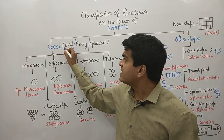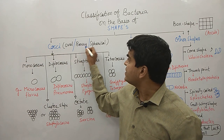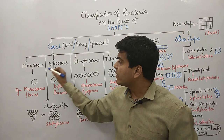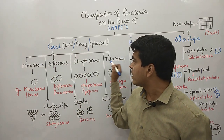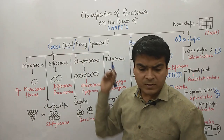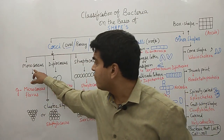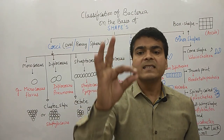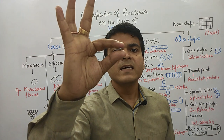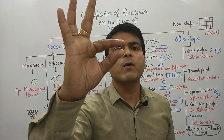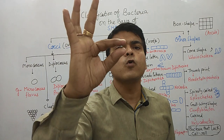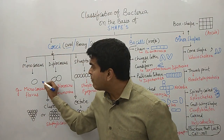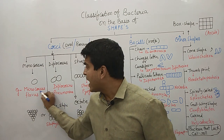Cocci are oval, berry, or spherical shaped bacteria. The different types of cocci include monococcus, diplococcus, streptococcus, tetracoccus, cluster shape, octate, and kidney shape. Monococcus is a single spherical bacterium — just look at the shape here. The example of monococcus is Micrococcus flavus.